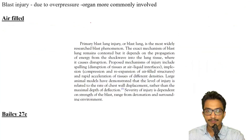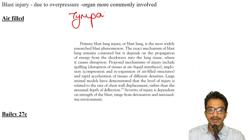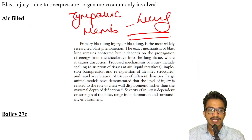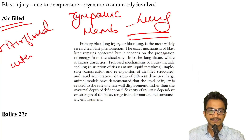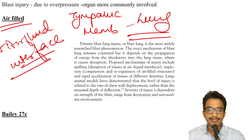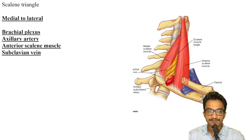For blast injury: if the most common organ is asked, it should be the tympanic membrane, followed by the lung. If the mechanism is asked, air-filled organs are more commonly involved because of the interaction at the air-fluid interface. If organ-specific options are given, it is tympanic membrane first, then lung.